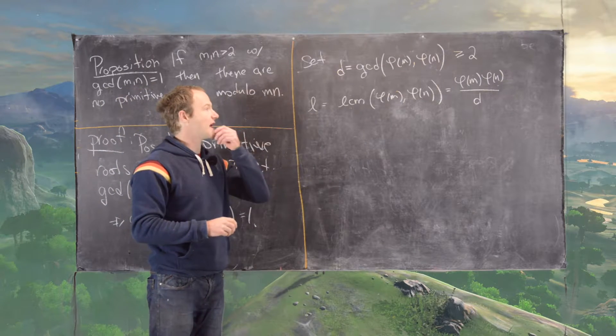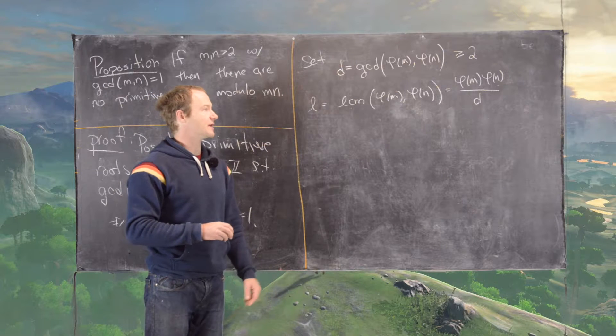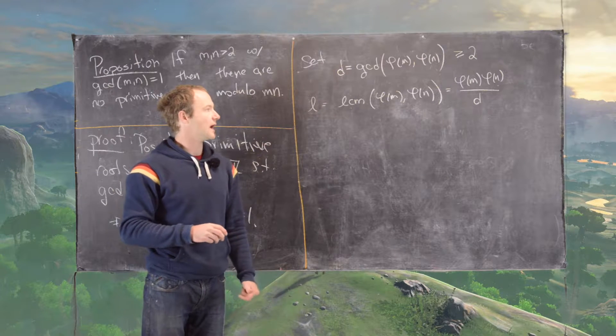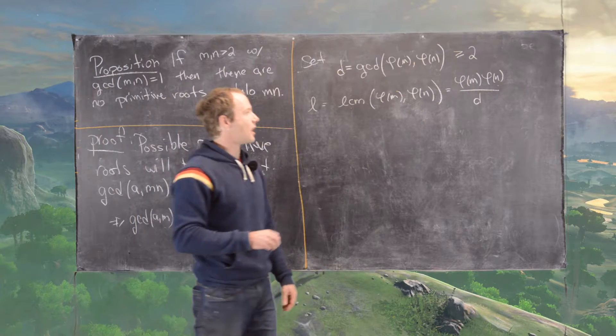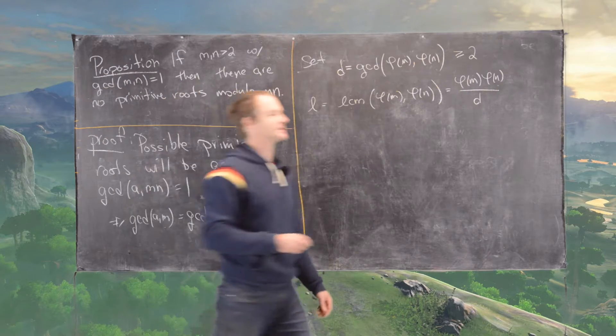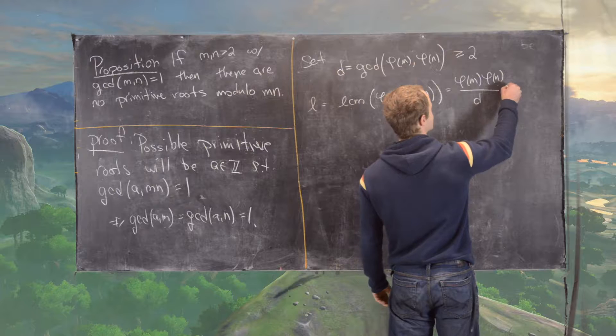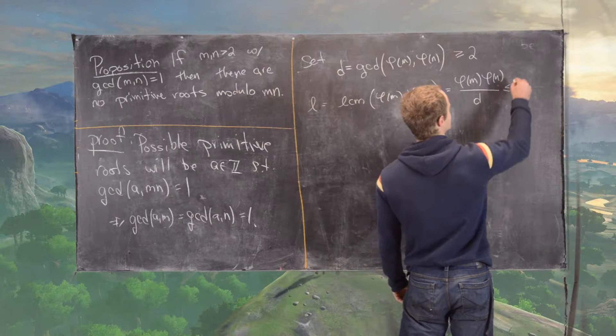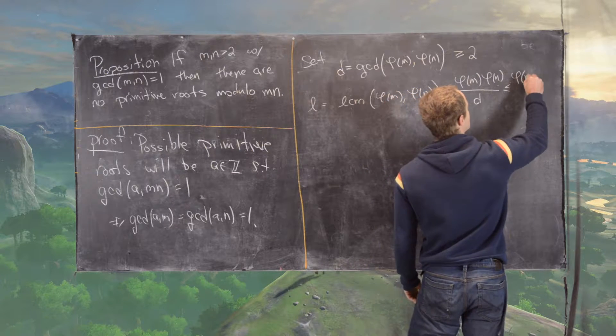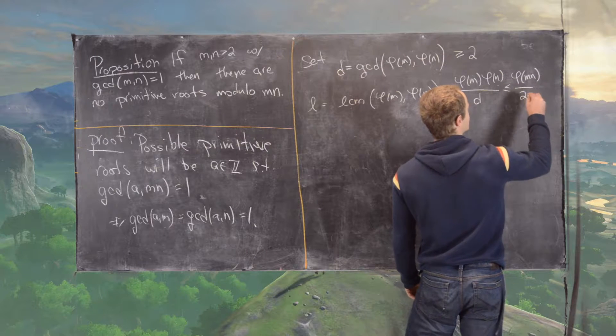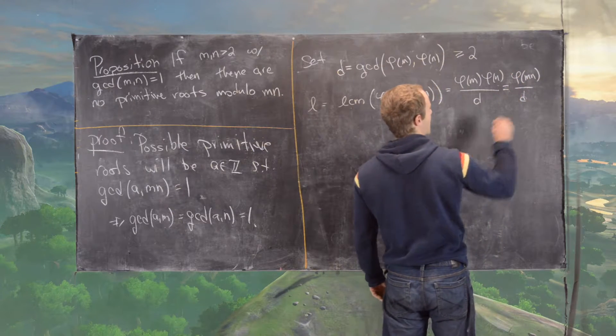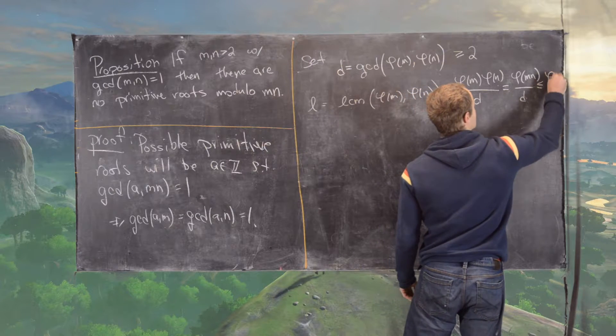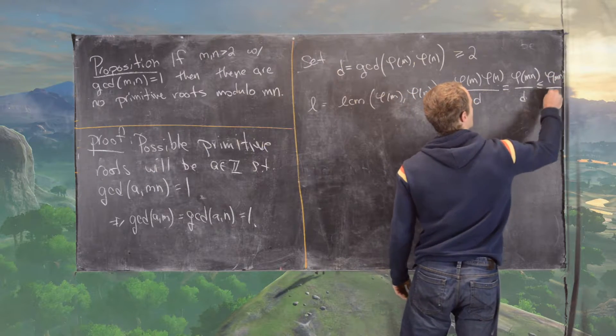But then we know that M and N are relatively prime and phi is a multiplicative function on relatively prime natural numbers. So this gives us phi of MN over D. That's equal to that, which is less than or equal to phi of MN over 2.